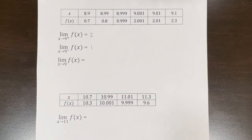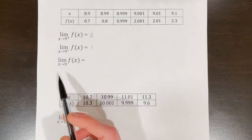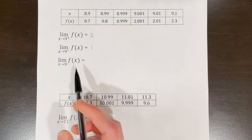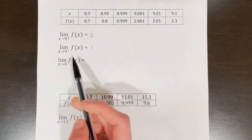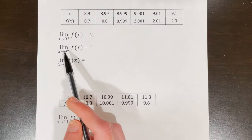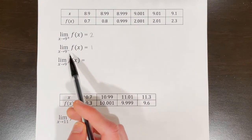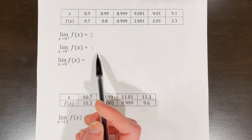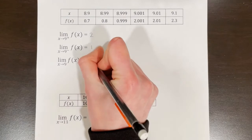Remember that when the right side limit and the left side limit of a function are different, the overall limit at that number does not exist. Because the right side limit and left side limit of f(x) as x approaches 9 are different, the overall limit does not exist.